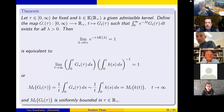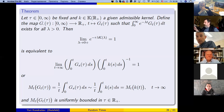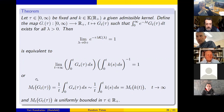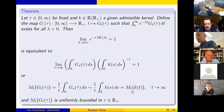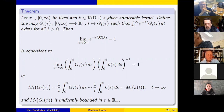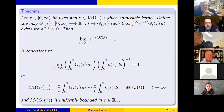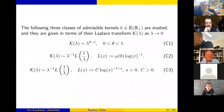In other terminology, the Cesaro mean for the density of the subordinator is asymptotically the same as the Cesaro mean for our kernel k. This is the crucial moment for all applications.